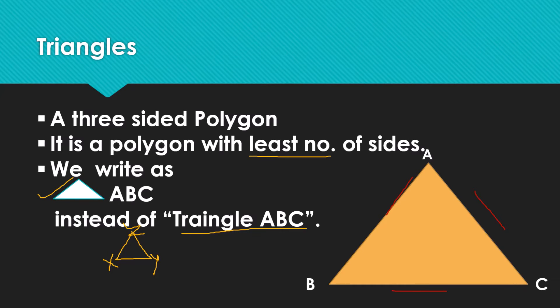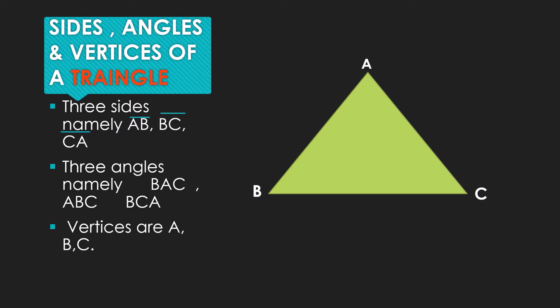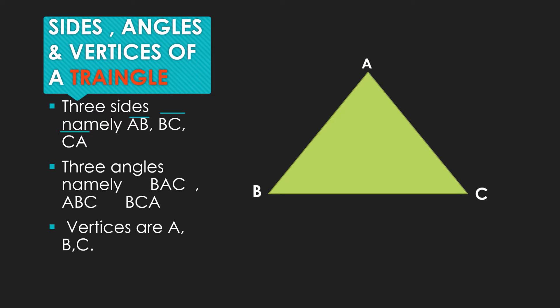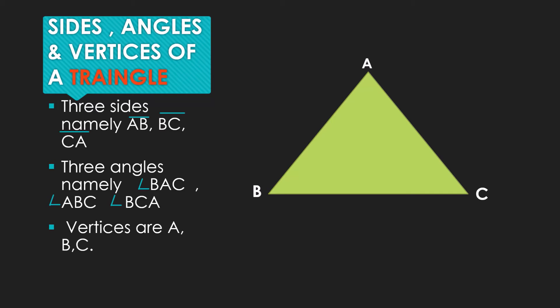Now, sides, angles, and vertices of a triangle. As you can see, there are three sides, namely AB, BC, and CA, and three angles: angle BAC, angle ABC, and angle BCA. The vertices are A, B, and C.